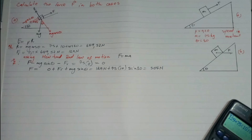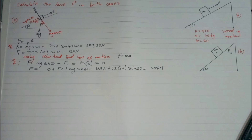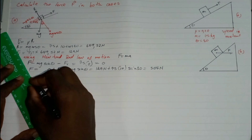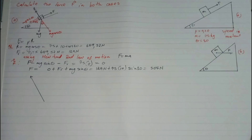Now for Case B, it's not going to be the same, but we'll use the same concept. Let me draw the free body diagram for Case B. We have the normal force R acting perpendicular to the slope.